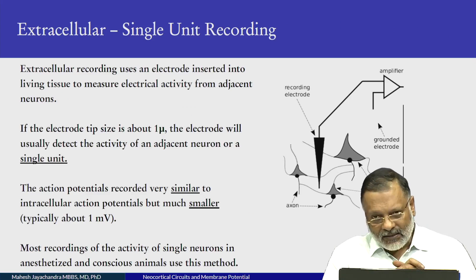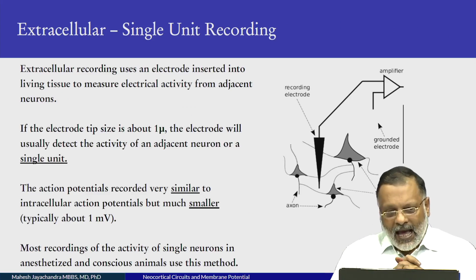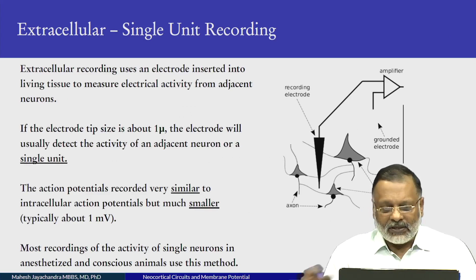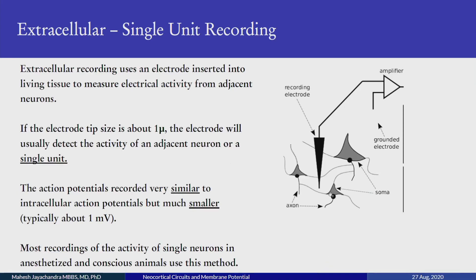That was all intracellular recordings. Now let us consider extracellular recordings. As mentioned, here the electrode is very close to the neuronal tissue but not inside it — just adjacent to it. If the electrode tip is about 1 micron, it would record the activity of an adjacent cell, and that is called a spike or a single unit. These are very similar to intracellular action potentials, but much smaller — typically only about 1 millivolt. But they can be picked up.